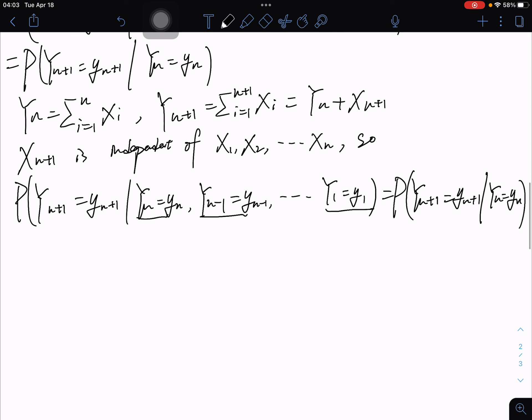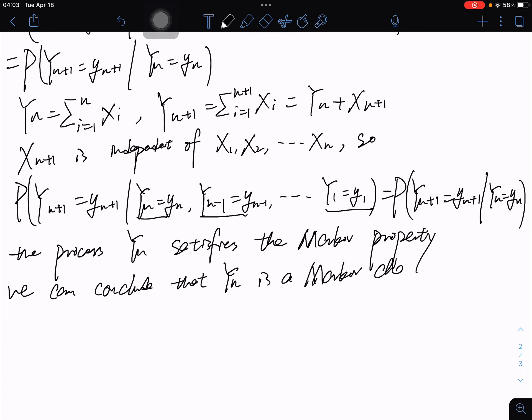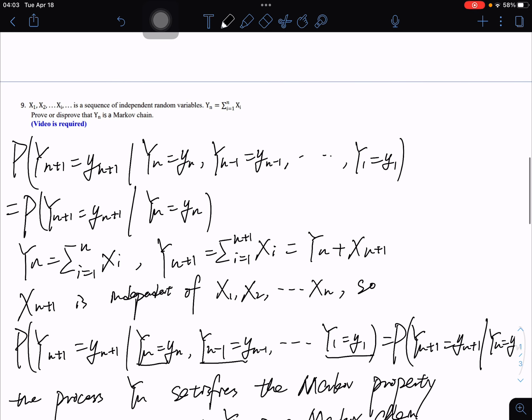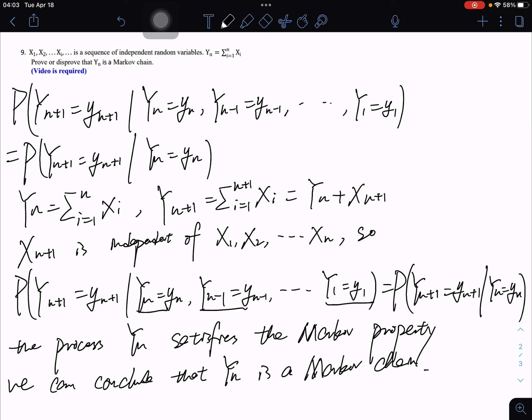We can see that this satisfies the property of the Markov chain. Through this, we can conclude that the process Y_n satisfies the Markov property, and therefore Y_n is a Markov chain. So we proved that Y_n is a Markov chain. We finished this problem. Thank you.